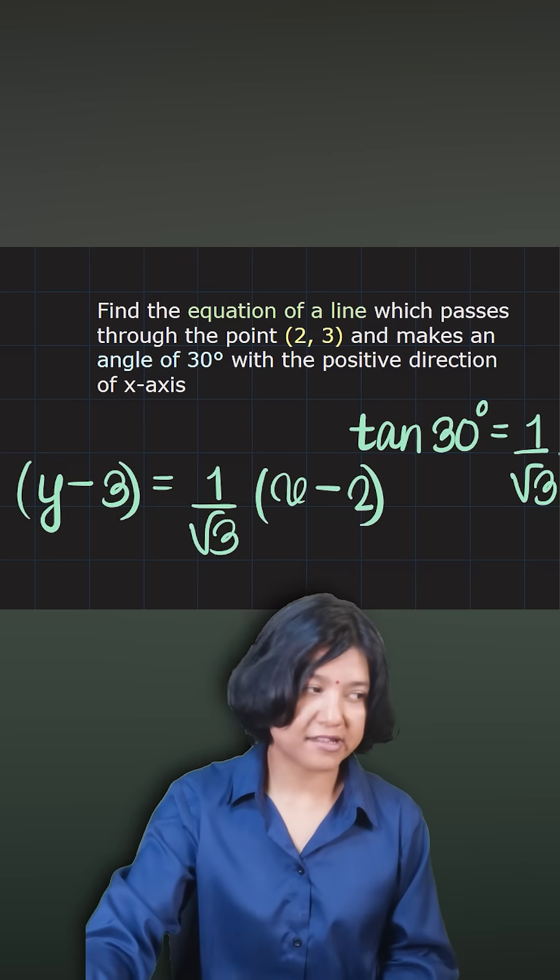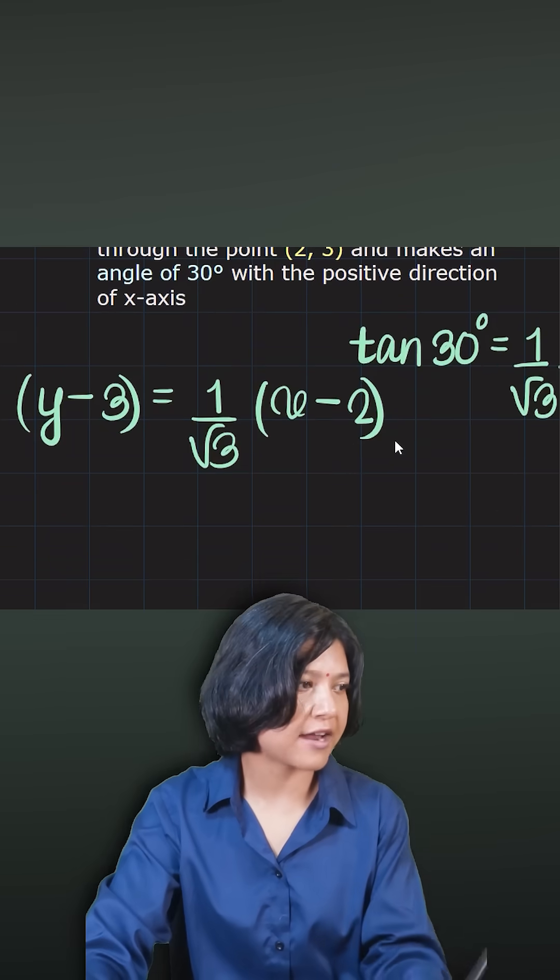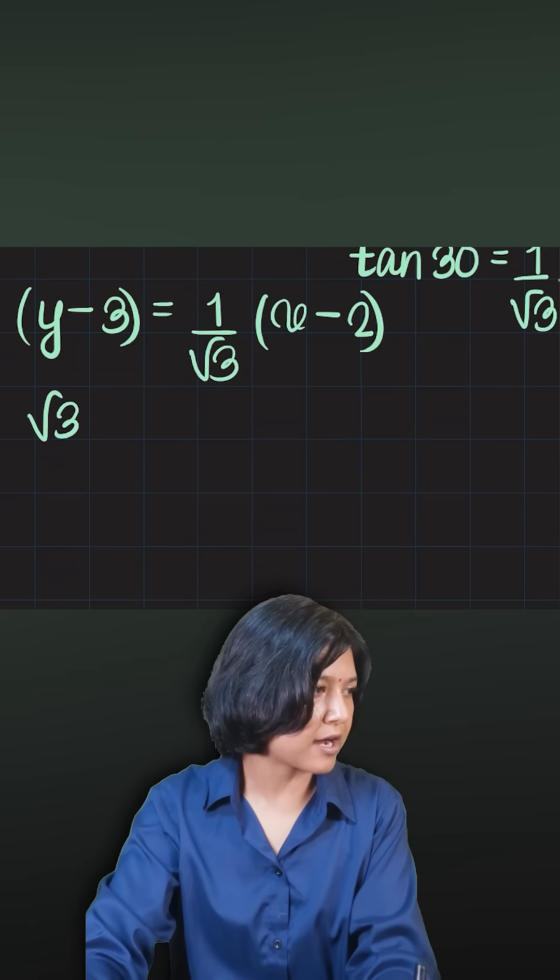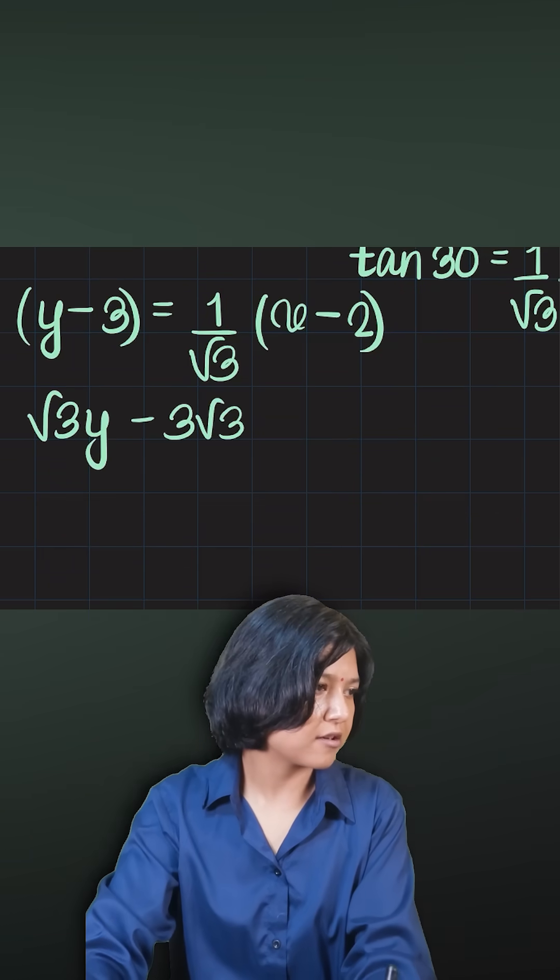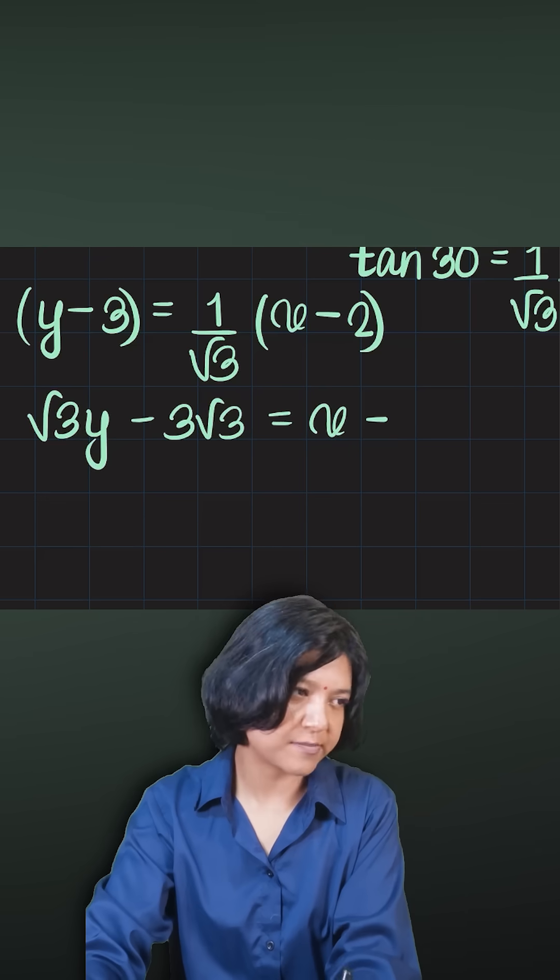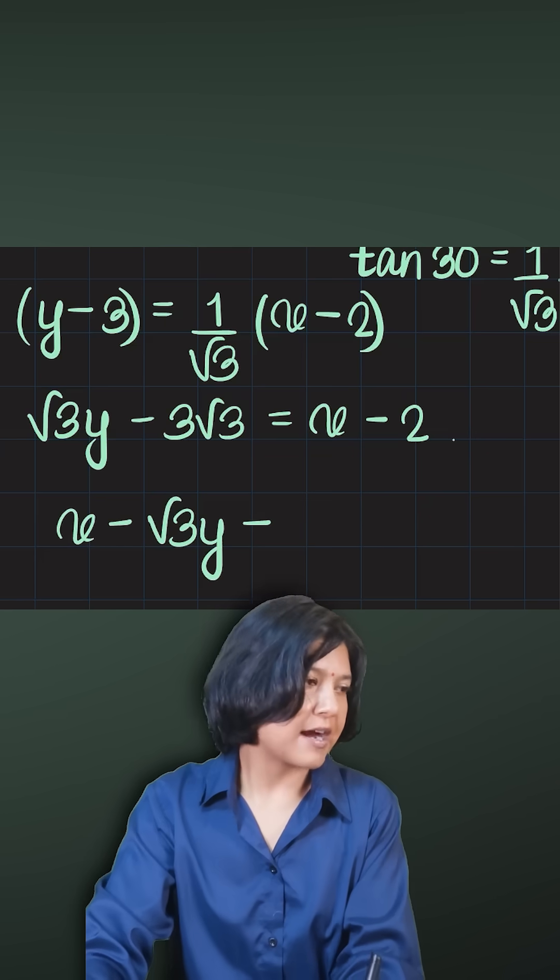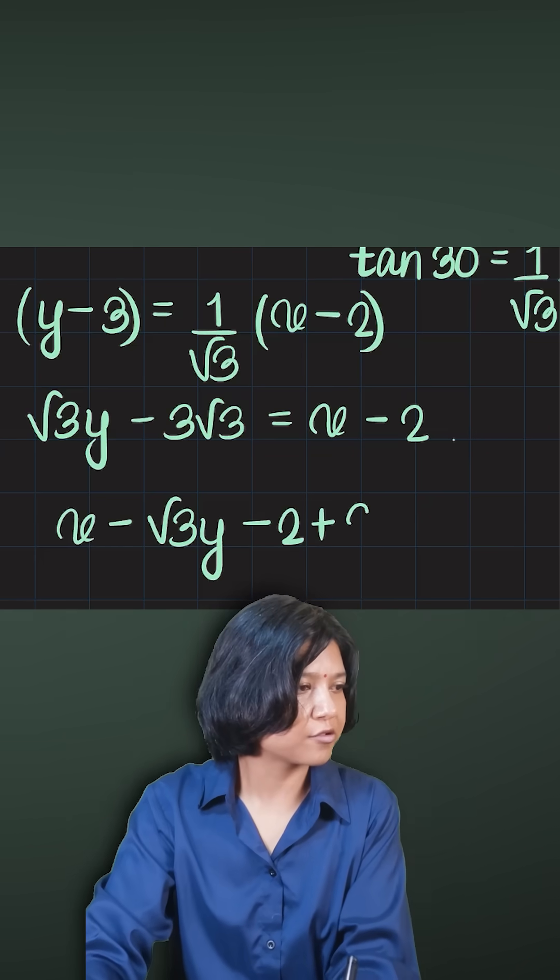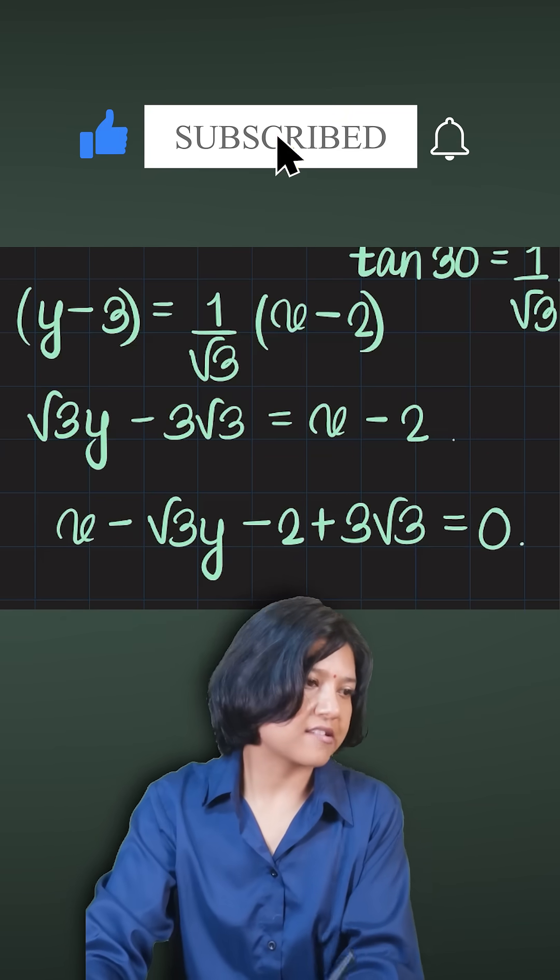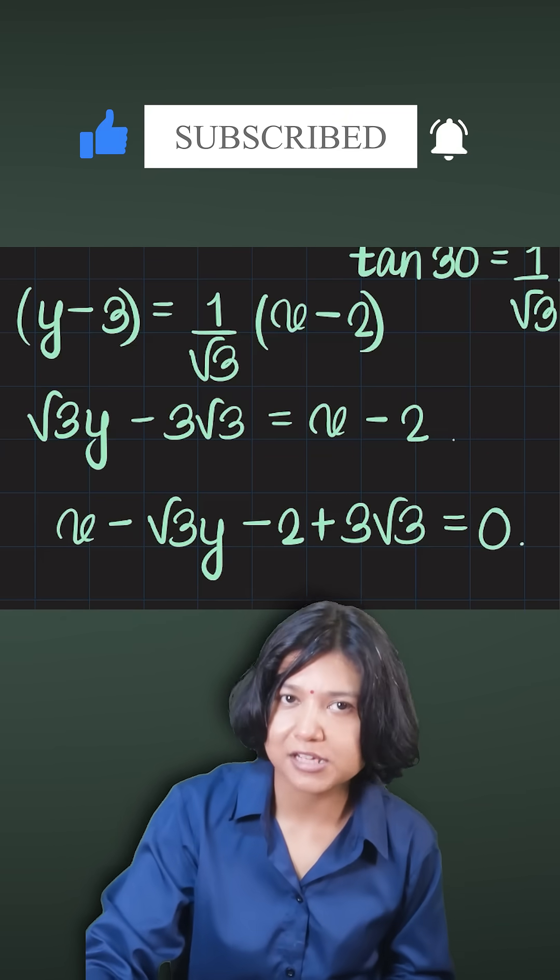You want to simplify and write things in a simpler manner. That gives you root 3y minus 3 root 3 equals to x minus 2. Let's bring everything to one side, so I'll have x minus root 3y minus 2 plus 3 root 3 equals to 0. This is how I would find the equation in no time.